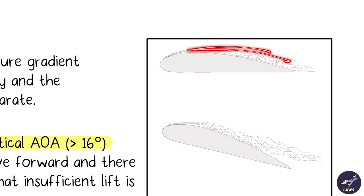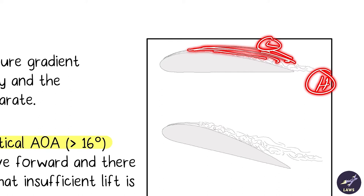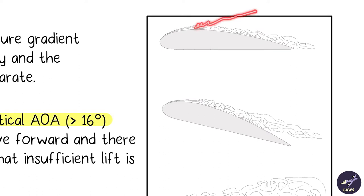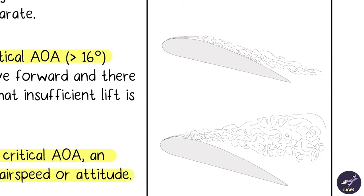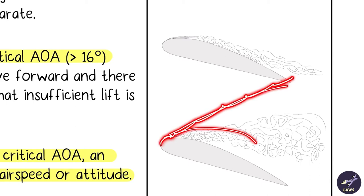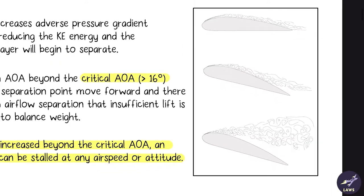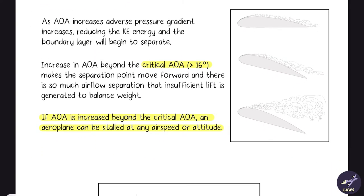The adverse pressure gradient — flow from low to high — keeps on increasing as you increase your angle of attack. The airflow starts to separate earlier, and finally when you cross 16 degrees it separates just after the leading edge. There is no airflow above the wing, which reduces lift, and you don't have enough lift to balance the weight. Increasing angle of attack beyond 16 degrees moves the separation point forward, generating insufficient lift.